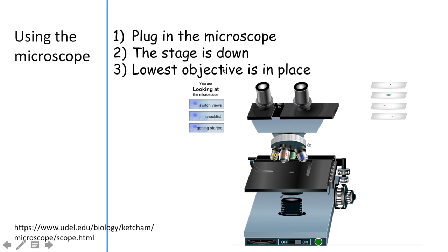The next step says that the lowest objective is in place. Here we have all of these objectives, and this one is the lowest magnification of 4, 10, 40, and 100. Notice where the hole is in the stage. This is where the light is going to be coming through and where you would want your lowest magnification objective to be in place. Let's go ahead and move the objectives by touching only the revolving nosepiece.